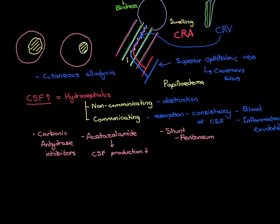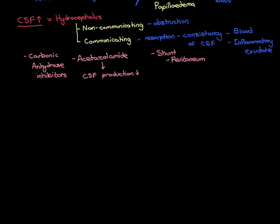When discussing intracranial hypertension, we can categorise the causes into those that cause an increase in cerebrospinal fluid, those that increase the amount of tissue inside the skull, and those that lead to an increased amount of blood inside the skull. We've started by discussing things that lead to too much cerebrospinal fluid, which is called hydrocephalus. Now we're going to move on to the things that can cause too much brain volume inside the skull.